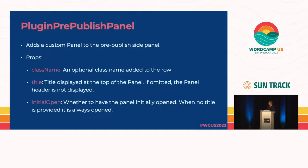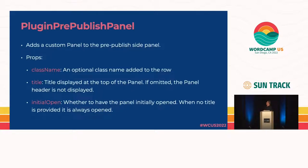The PluginPrePublishPanel adds a panel to the pre-publish sidebar that you get when you hit Publish the first time. It takes three props: an optional class name; a title, which is what will appear in that panel — if you leave the title off, the header will not display; and an initialOpen flag that tells you whether or not the panel itself is open. If no title is provided, it's always open.